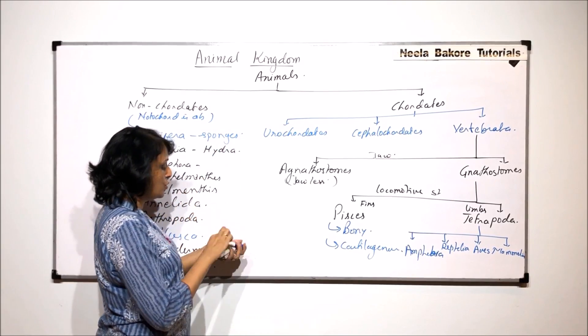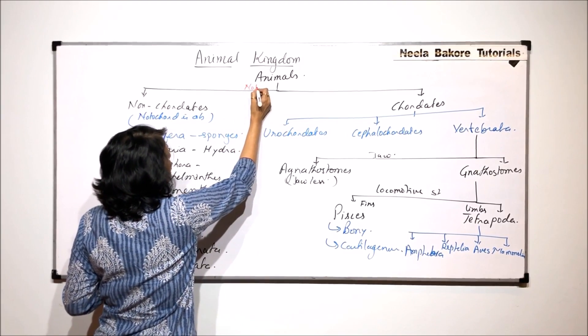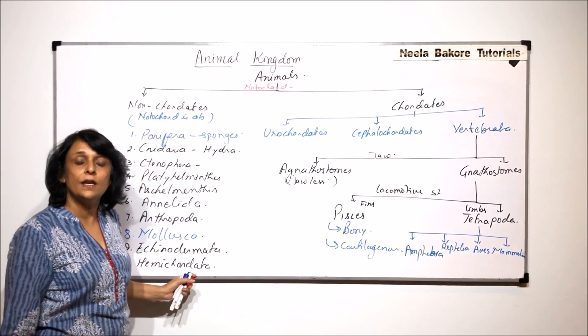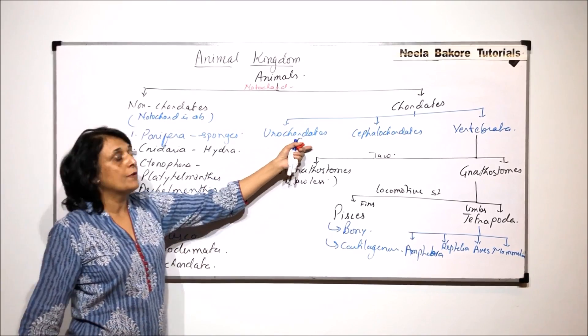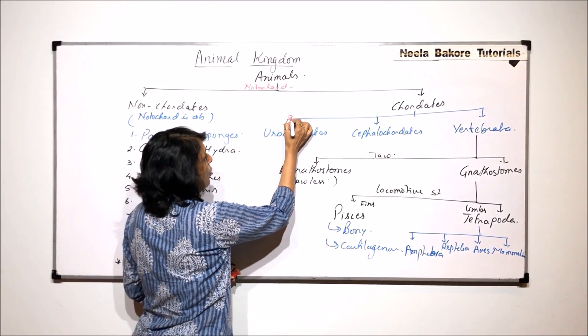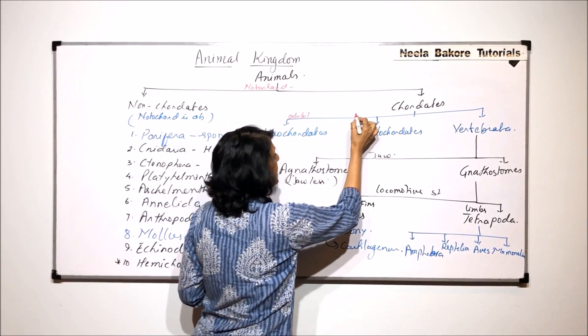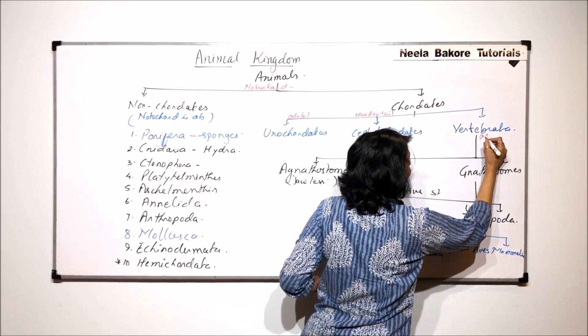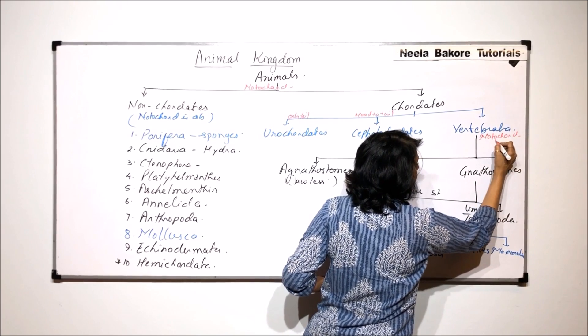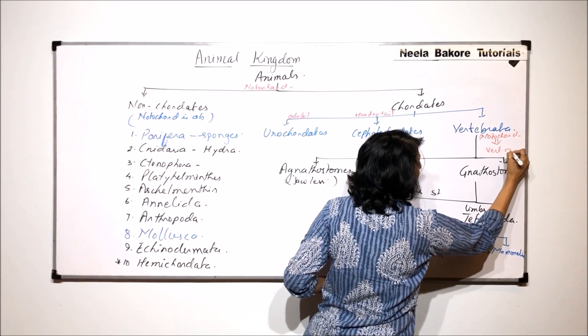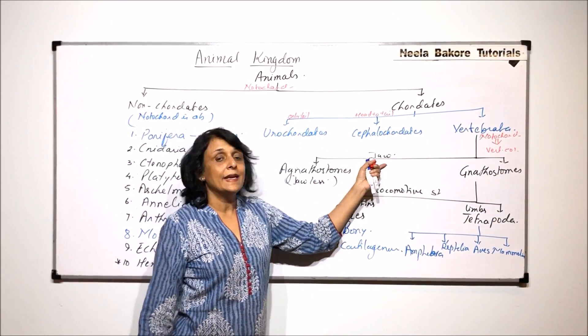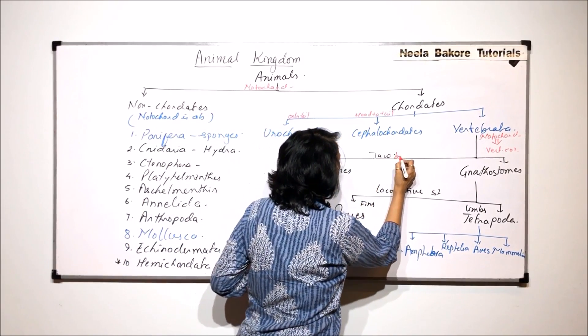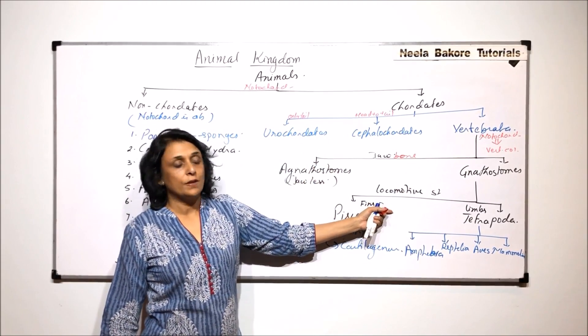So the first criteria which was used, which was the main one, that is the notochord, presence or absence of notochord. So all these which we have listed here, they do not have notochord. Now when they have notochord, if it is only tail region, then urocordates. If it is head to tail, then they are cephalochordates. And here notochord is replaced by vertebral column, that is the backbone. The next classification is with the criteria whether they have jaw bones or not. And the next is on the basis of locomotive structure.